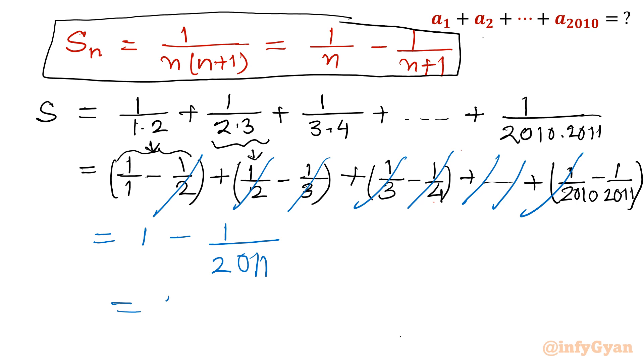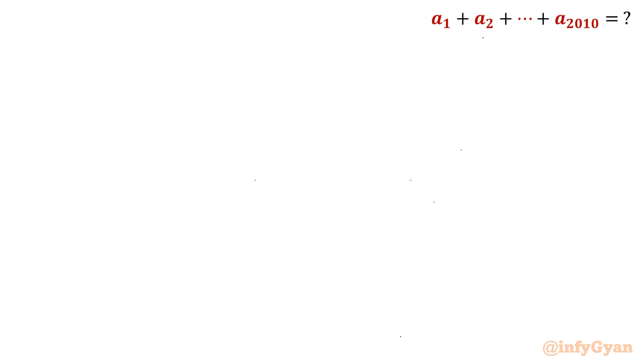So I can write this one as 2011/2011 - 1/2011. Now denominator is same, so we will take the difference in the numerator. So this value will become S = 2011 - 1 over 2011. So S will be equal to 2010 divided by 2011.